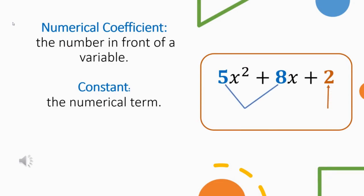A coefficient is a number in front of a variable. In our case that would be the numbers 5 and 8 because they are in front of variables x squared and x. We also have a constant number 2. That is a number standing on its own.